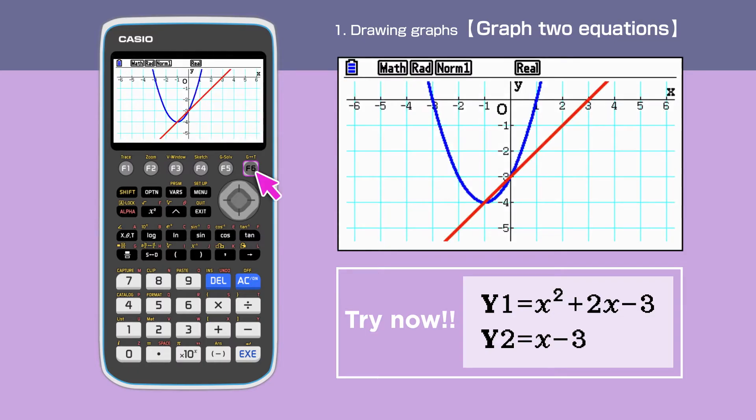Enter F6 to draw the graphs. We have a parabola and a straight-line graph on the same screen.